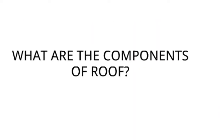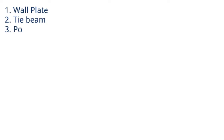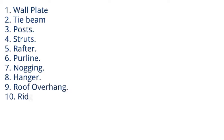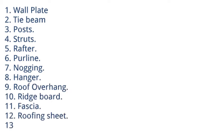The components of a roof include the wall plate, tie beam, post, struts, rafter, purlin, noggin, hanger, roof overhang, ridge board, fascia board, roofing sheet, roof gutter, and eve angle.